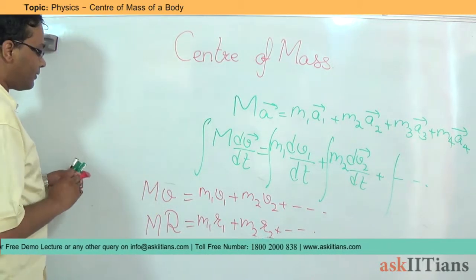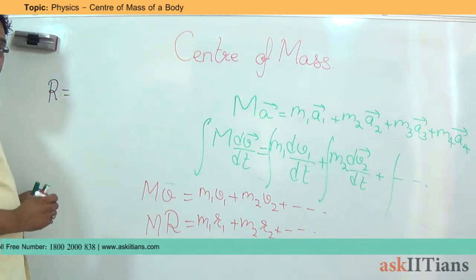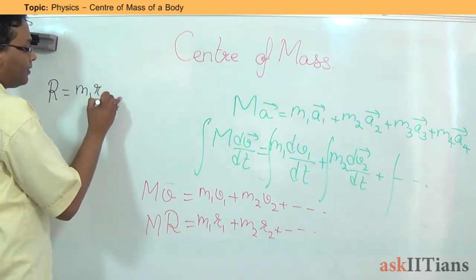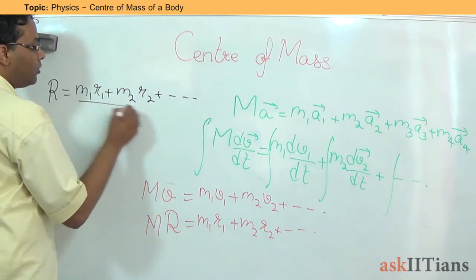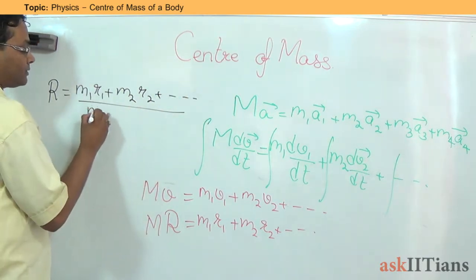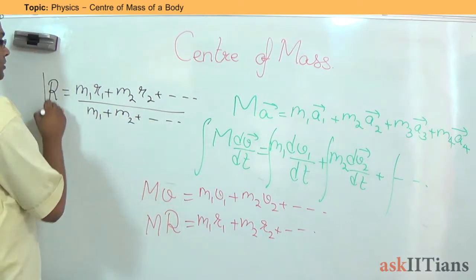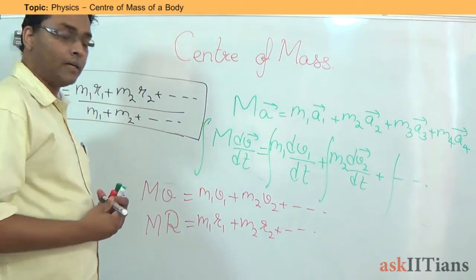Therefore, what I get from this is that the position vector of the center of mass can be given by m1 r1 plus m2 r2 and so on, divided by the total mass. The total mass can be given by m1 plus m2 and so on. So this is how we find out the position of the center of mass.